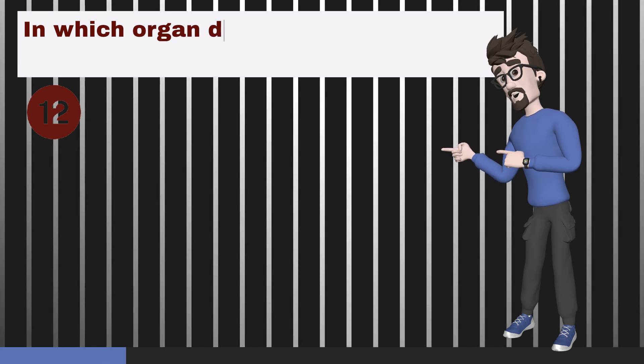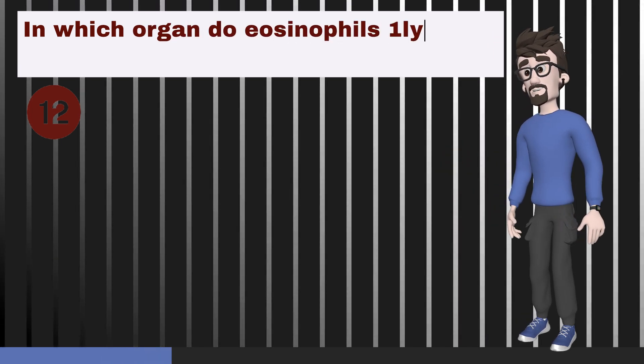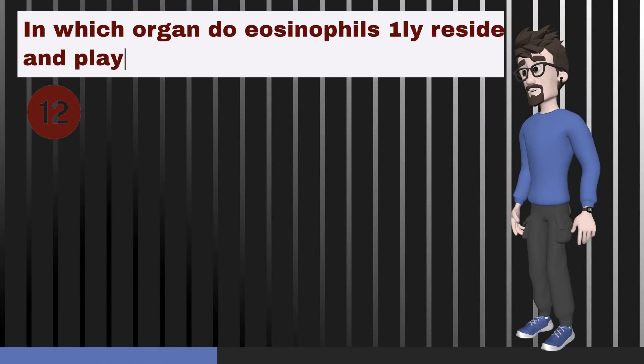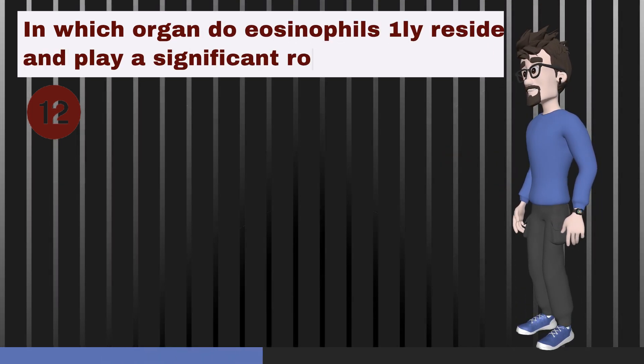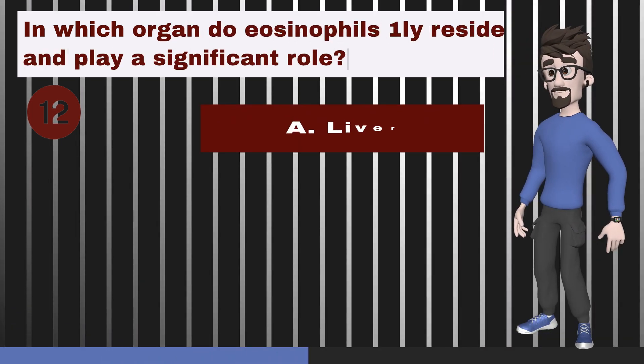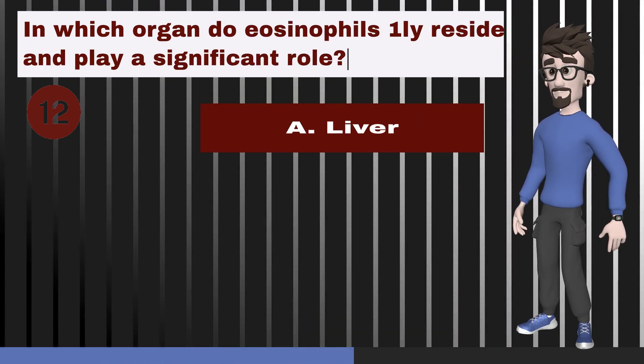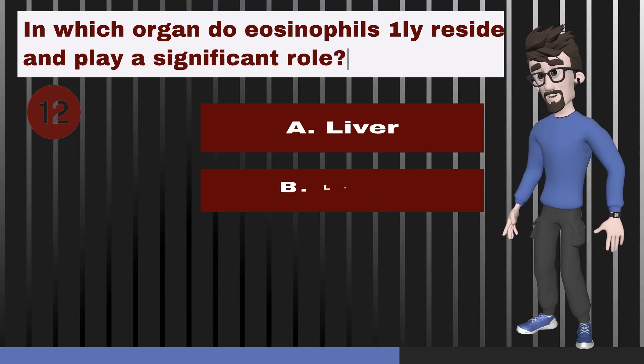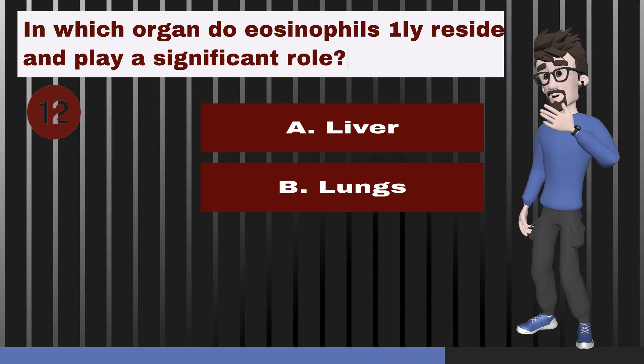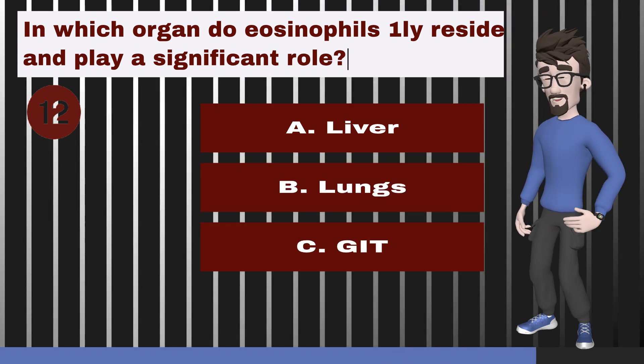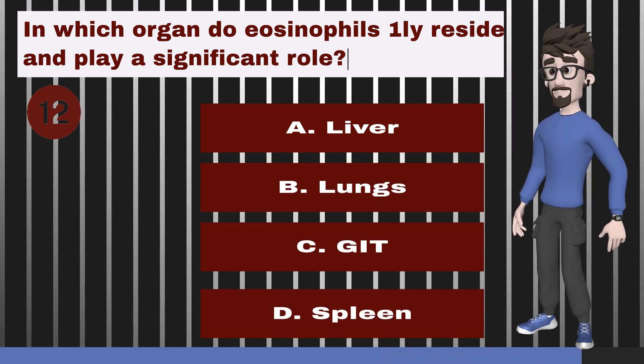In which organ do eosinophils primarily reside and play a significant role? A. Liver. B. Lungs. C. Gastrointestinal tract. D. Spleen.